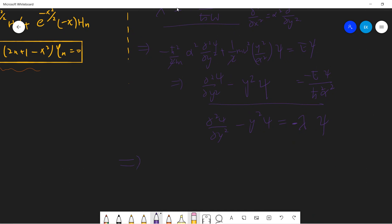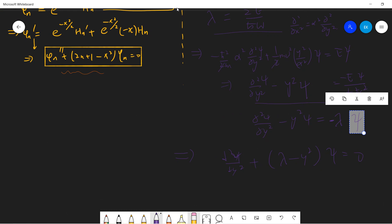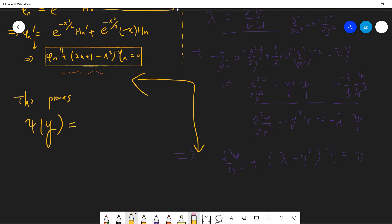So combine all of this, then we have that phi_n, the differentiation of psi with respect to y, plus lambda minus y squared psi equals zero. So combine with these two, since we have all the tools, so this proves we know psi of y is psi of y, which is basically the Hermitian polynomial. And we also prove that lambda is 2n plus 1.